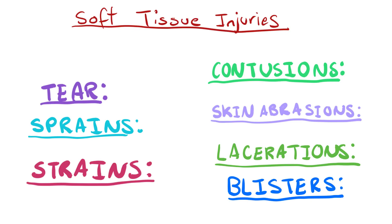In summary, soft tissue injuries fall into two groups. Tears, sprains and strains are treated with RISA — we'll learn more about RISA in a later video. Contusions, skin abrasions, lacerations and blisters are generally dealt with by cleaning the wound site and applying a non-stick dressing. Note that with contusions, if there is blood present, it may need to be treated with both RISA and wound cleaning.